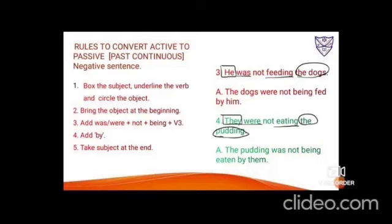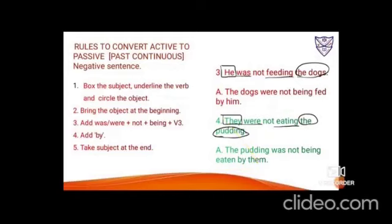Example 4: 'They were not eating the pudding.' 'They' is the subject, 'were eating' is the verb, 'the pudding' is the object. Bring 'the pudding' ahead — it was 'they' so 'were' was used, but 'pudding' is singular so use 'was'. Bring down 'not'. Give -ing → 'being'. Third form of eat: eaten. Add 'by them'. Result: 'The pudding was not being eaten by them.'